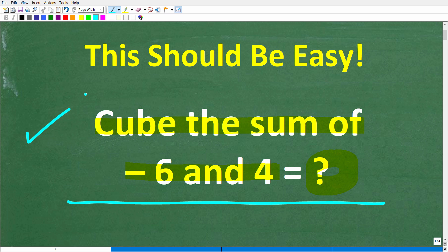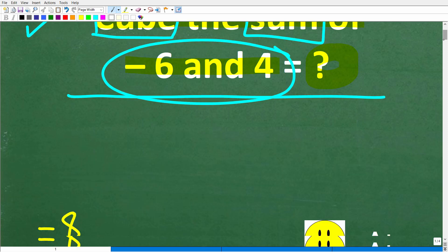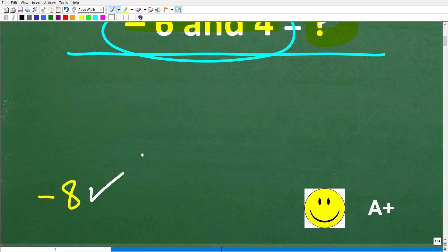Okay, so before I show you the answer, let's take another look at this phrase. So we want to cube the sum of negative 6 and 4. Alright, so let's go ahead and take a look at the answer. The correct answer here is negative 8.